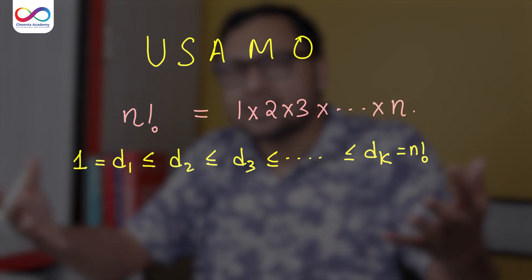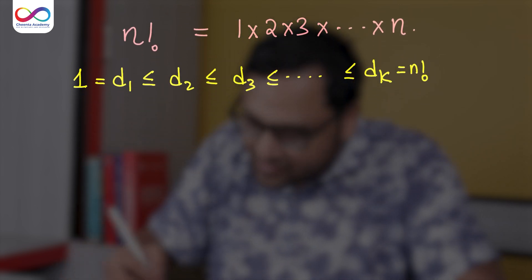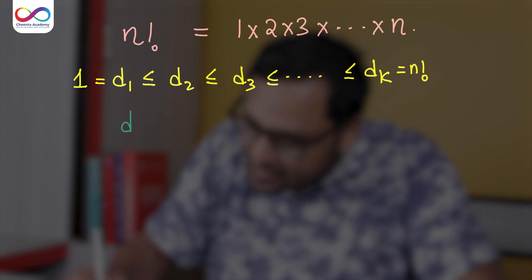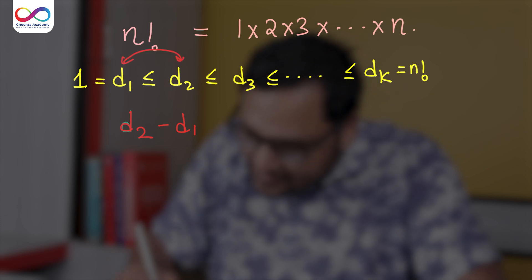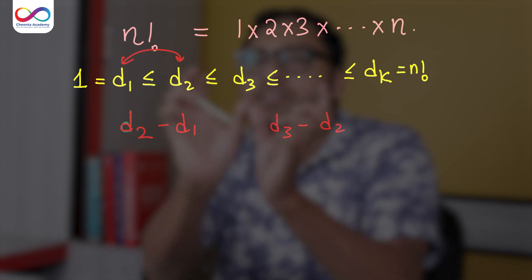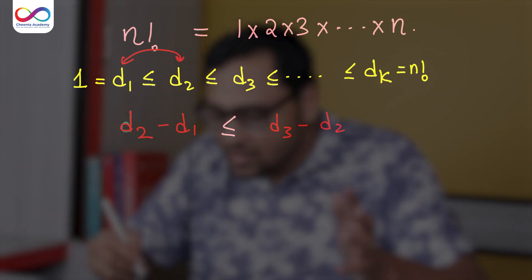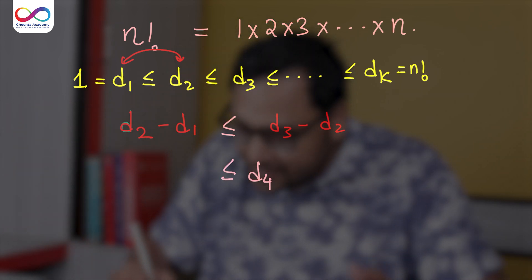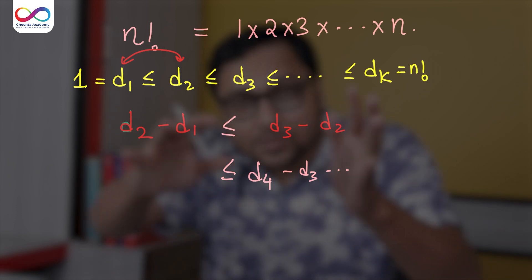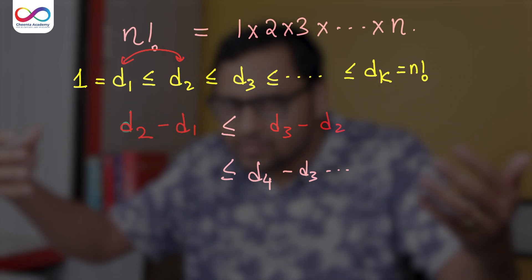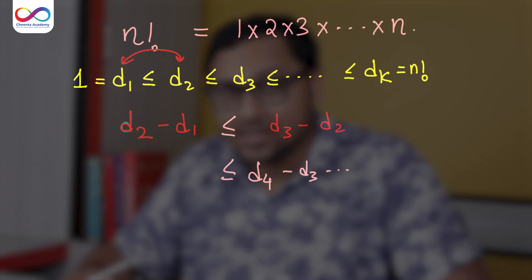Now the question asks: what about the divisor differences? So if I take D2 minus D1, D3 minus D2, and keep on taking the differences of the divisors — will it also be increasing? Less than or equal to D4 minus D3 and so on? Or is it true that there aren't many such numbers for which the divisor differences will increase? That is the question.